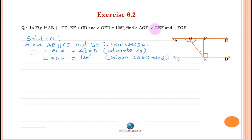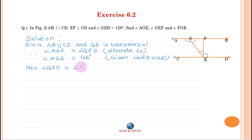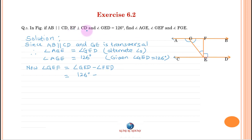To find angle GEF: angle GEF equals angle GED minus angle FED. Angle GED is given as 126 degrees, and angle FED is equal to 90 degrees since EF is perpendicular to CD. So angle GEF equals 126 minus 90 equals 36 degrees.